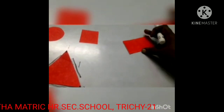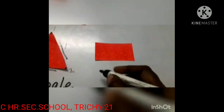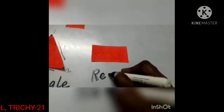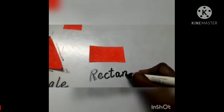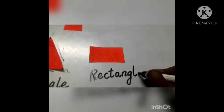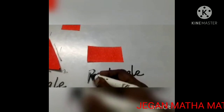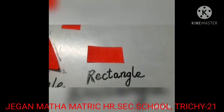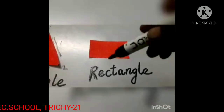Now we are going to learn the next shape. What is this? Rectangle. R-E-C-T-A-N-G-L-E, Rectangle. What is this? Rectangle. R-E-C-T-A-N-G-L-E, Rectangle. The shape is Rectangle.